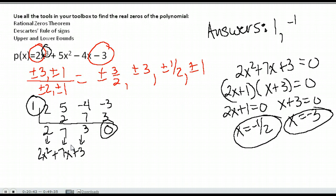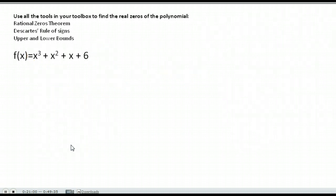So my answers are 1, negative 1 half, and negative 3. Those are all three real zeros for this polynomial. And that time I just got lucky and my first one worked. It's always good when that happens.